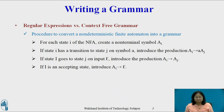Consider the procedure to convert a non-deterministic finite automata into a grammar. Step 1: for each state i of the NFA, create a non-terminal symbol capital Ai. Step 2: if state i has a transition to state j on input symbol a, then introduce the production Ai → aAj. Step 3: if state i goes to state j on input symbol epsilon, then introduce the production Ai → Aj. Step 4: if state i is an accepting state, introduce the production Ai → epsilon.